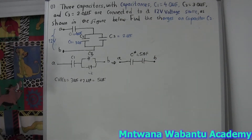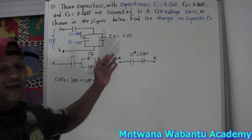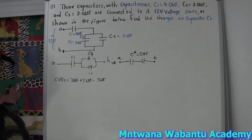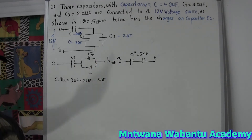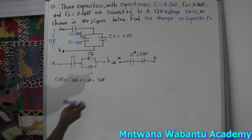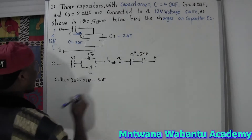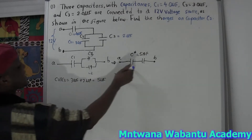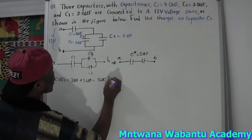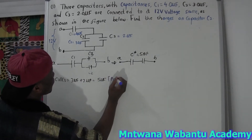Now let's find the equivalent capacitance. C1 and C* are in series with each other. For series capacitors, we use the formula: 1 over C_equivalent equals the sum of the reciprocals.